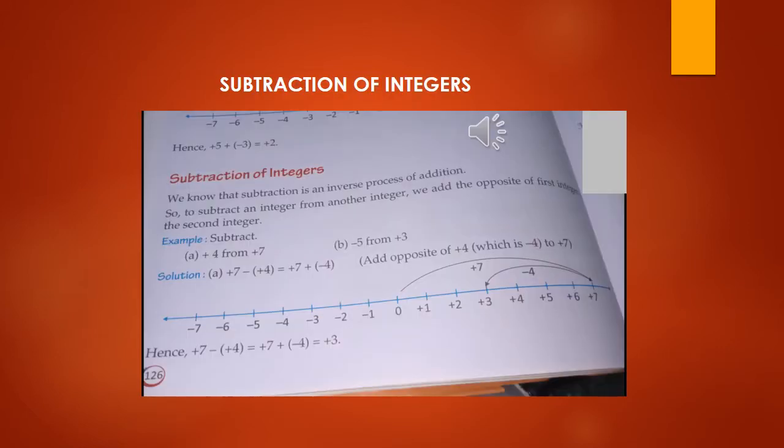Look at example number 8: subtract plus 4 from plus 7. So we have 7 minus 4. On the number line we move from 0 to plus 7, then move back 4 places. From 3 to 7 the number of places is 4. So 7 plus minus 4 equals 7 minus 4 equals 3.